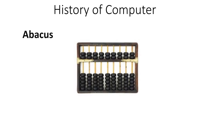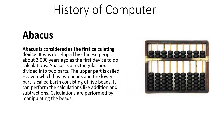Let me tell you about the Abacus. Abacus is considered as the first calculating device. It was developed by the Chinese people about 3000 years ago. Abacus is a rectangular box divided into two parts — the upper part is called heaven, which has two beads, and the lower part is called earth, which has five beads. The calculations were performed by manipulating the beads and Abacus is capable of performing only addition and subtraction.